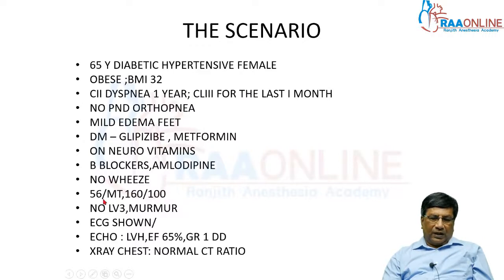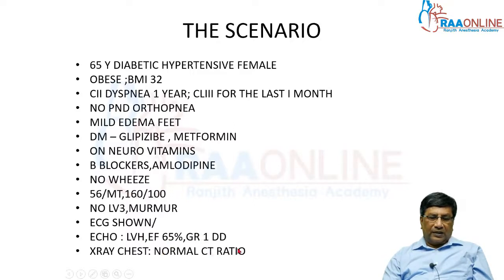On examination: no JVP elevation, heart rate is only 56, blood pressure 160/100. No third heart sound or murmur. ECG shows LVH, age 65. Grade one diastolic dysfunction. Chest X-ray shows a normal cardiothoracic ratio.